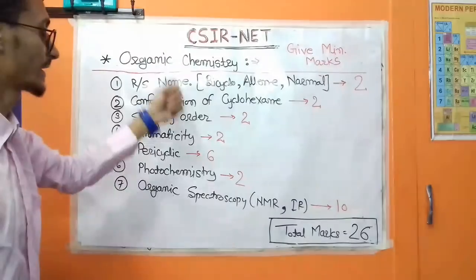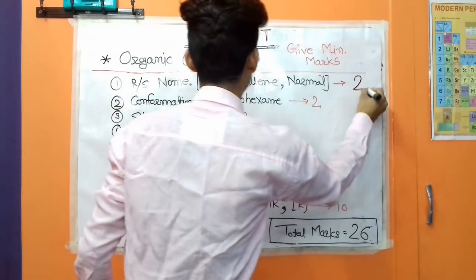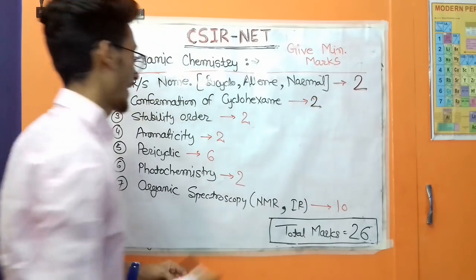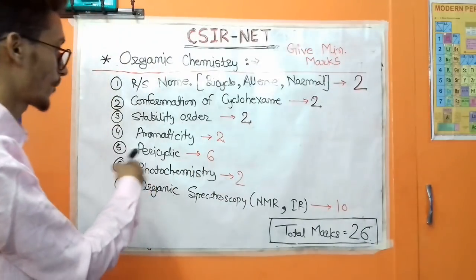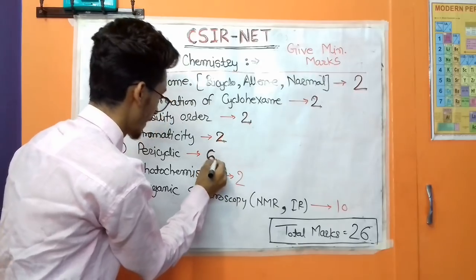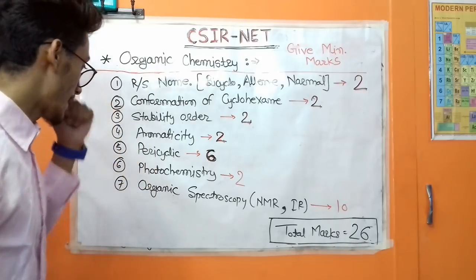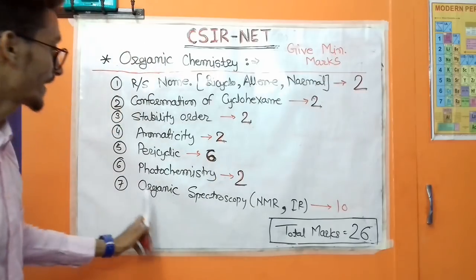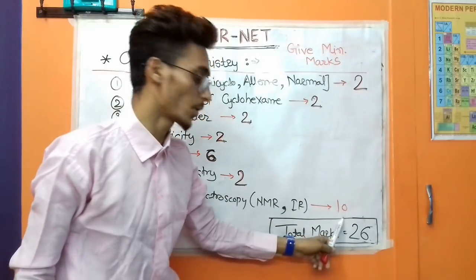In organic chemistry, the first topic is R/S nomenclature of bicyclo, alin, and related compounds — it gives 2 marks. Conformations of cyclohexane gives 2 marks. Stability order gives 2 marks. Aromaticity gives 2 marks. Pericyclic reactions give 6 marks — I also have a previous video on pericyclic reactions you can check out. Photochemistry gives 2 marks. And organic spectroscopy — NMR and IR — gives 10 marks.